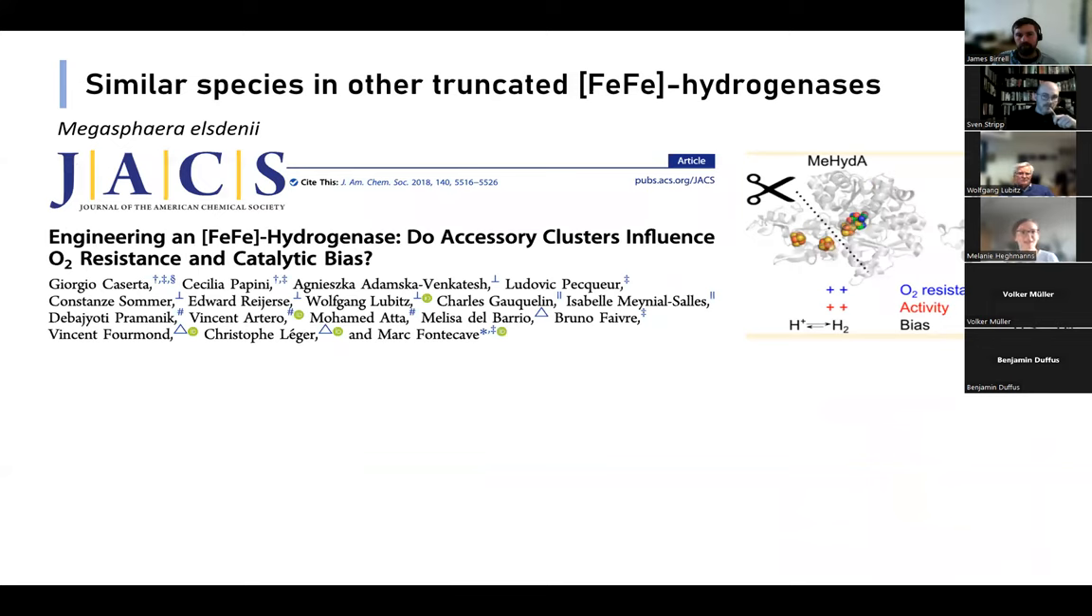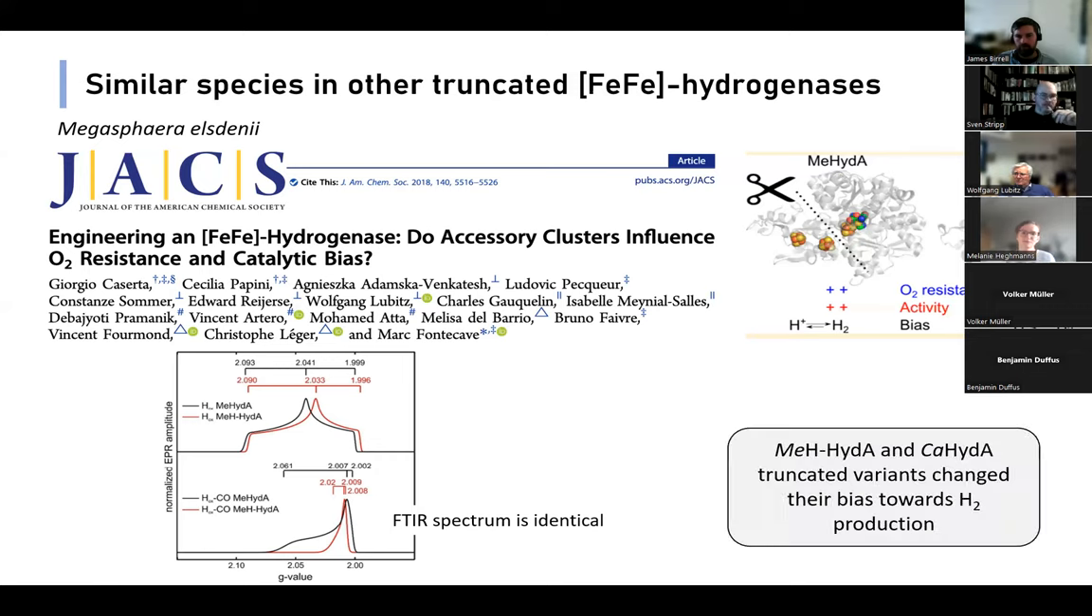Another example is the Megasphaera elsdenii hydrogenase, where they cut off the whole F-cluster domain so that it has no accessory iron-sulfur clusters anymore. Here they found for H-ox only slight changes, but the H-ox-CO or CO-treated state was completely altered in the EPR spectrum in comparison to the wild-type enzyme and the well-known H-ox-CO signal. However, the resulting FTIR spectra are identical. It might also be interesting to note that in both truncated variants of both of those organisms, the truncation changed the bias towards the H2 production. And also, they both were shown to be a bit more oxygen sensitive than the usual iron-iron hydrogenases.